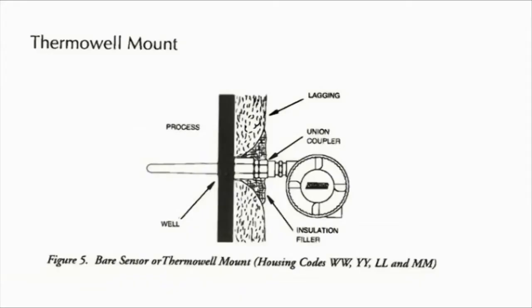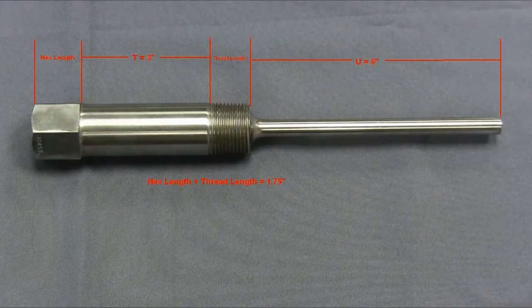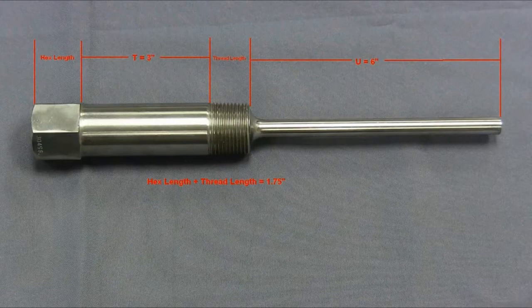The T lagging length is an extension added to the standard 1.75 inch thread and hex length. It is primarily used to extend the well connection through insulation, making it accessible to install or remove. Taking these dimensions, we find the thermowell has a U length of 6 inches and a lagging T length of 3 inches.